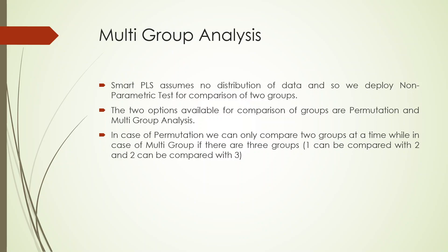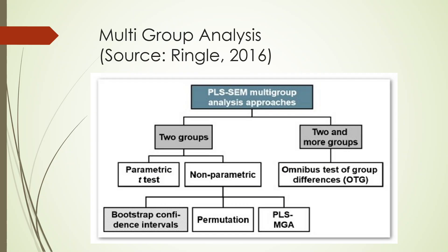In SmartPLS we don't assume normality of the data, and therefore a non-parametric test is used for comparison of two groups. For multi-group analysis we have two methods: MGA and permutation (or MICOM method). Multi-group MGA can compare more than two groups — one compared with two, two compared with three — but permutation can only compare two groups at a time. For comparison of two groups we use the non-parametric method PLS-MGA. At present in PLS-SEM we don't have any method to compare more than two groups simultaneously.